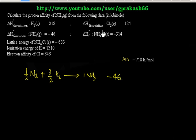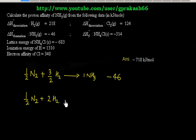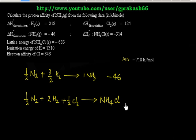Now the heat of formation for NH4Cl. We can write a similar reaction: half mole of N2 plus 2 moles of H2 plus half mole of Cl2 gives NH4Cl. For this reaction, delta HF is given as minus 314 kJ per mole.